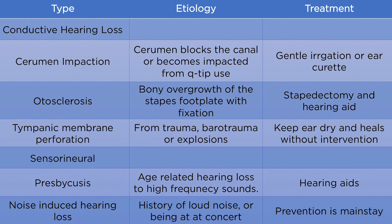For sensorineural hearing loss: presbycusis is age-related hearing loss, usually high-frequency sounds — give the patient hearing aids. Noise-induced hearing loss happens with a history of loud noise exposure, such as at a concert — prevention is the mainstay. Wear ear protection. And that is all of ENT and ophthalmology that you need to know. I'll see you in the next section.